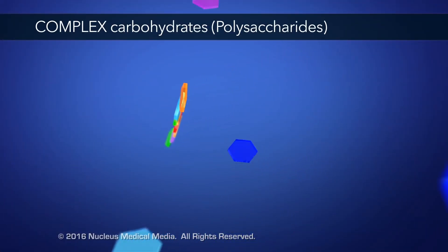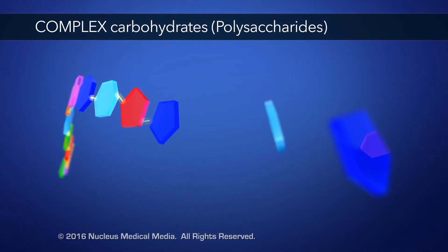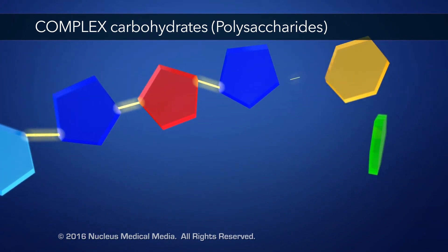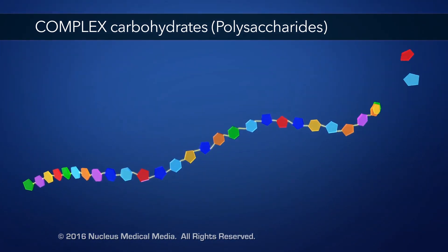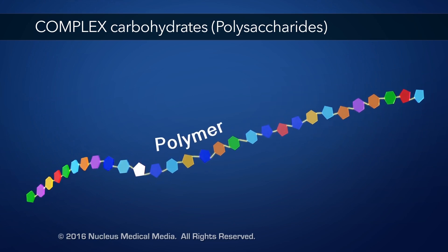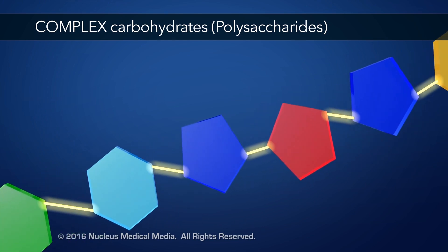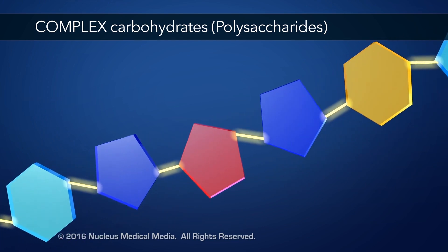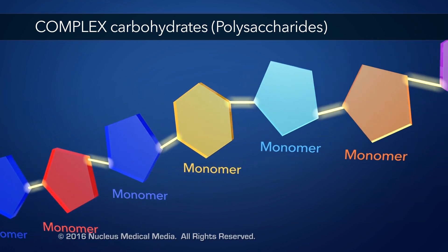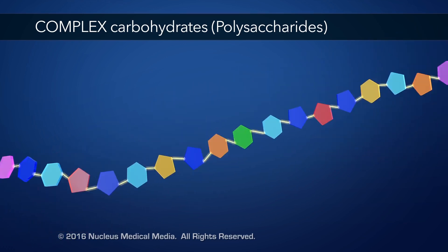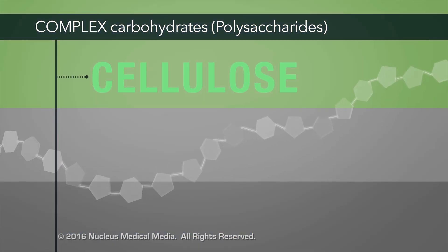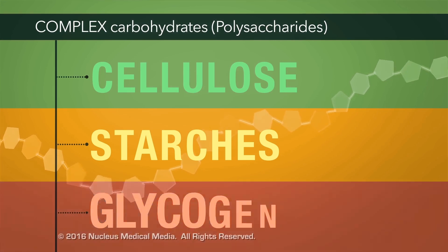Polysaccharides are very long chains of multiple monosaccharides chemically bonded together. An entire polysaccharide is referred to as a polymer, while each individual monosaccharide in this long chain is referred to as a monomer. Examples of polysaccharides include cellulose, starches, and glycogen.